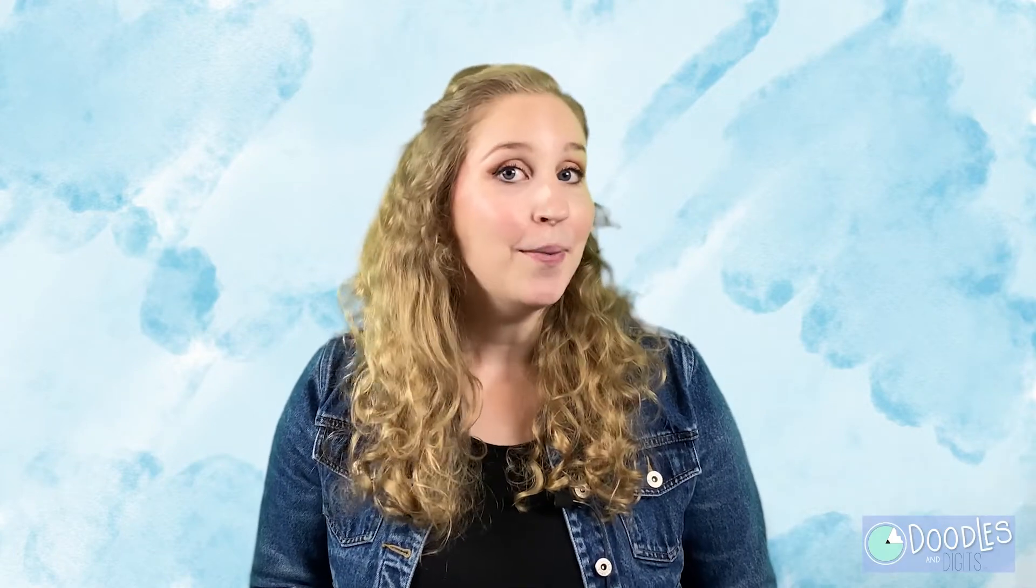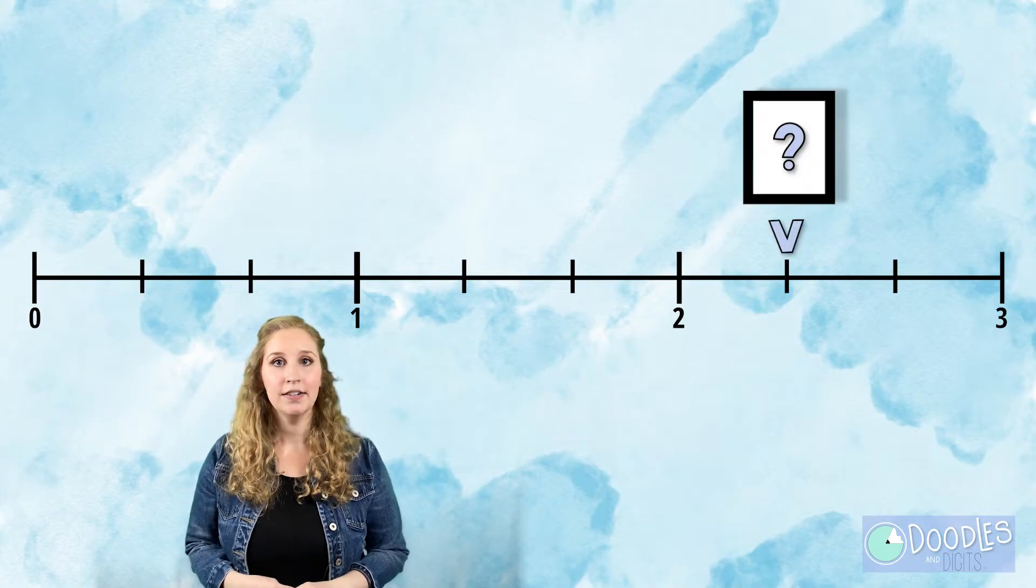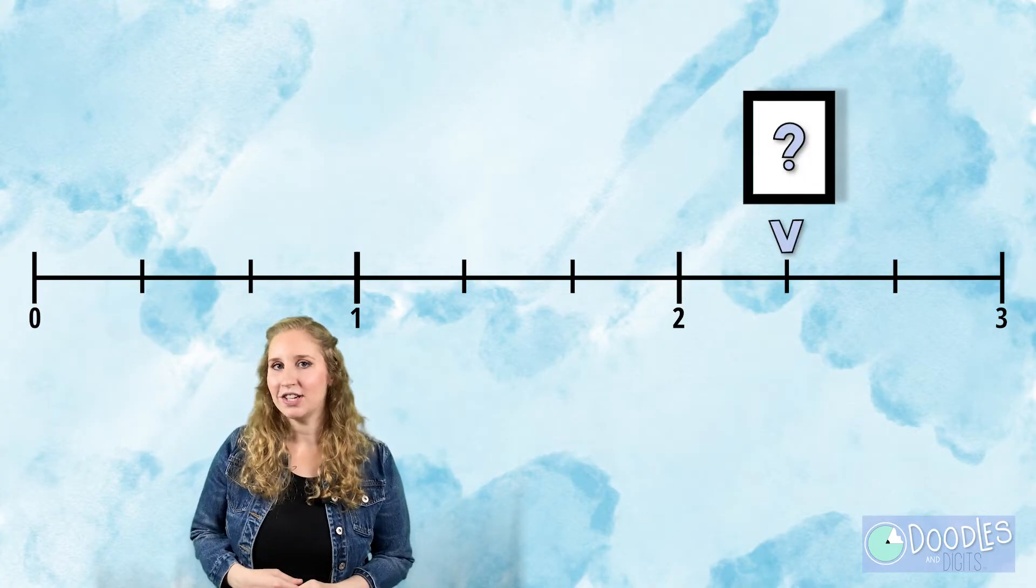Not only can you show mixed numbers with models, you can also use a number line. Let's try one now. This number line right here is showing a mixed number. What mixed number do you think it's showing?